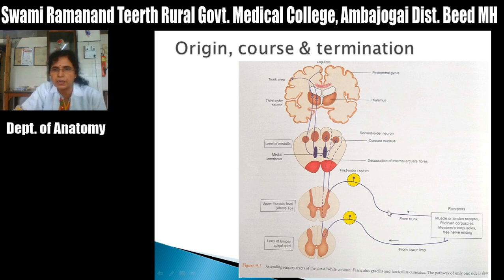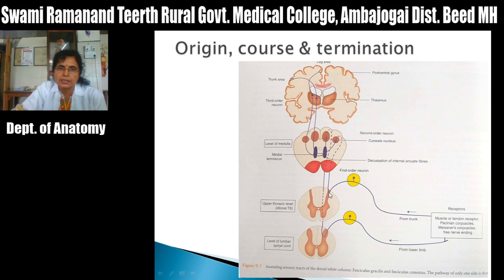From the upper thoracic and cervical segments, sensations are carried by peripheral processes of first order neurons in the dorsal root ganglia, then through central processes without relay in the posterior horn. They ascend upward through the posterior funiculus but lie on the lateral aspect of fasciculus gracilis — these ascending fibers form the fasciculus cuneatus.